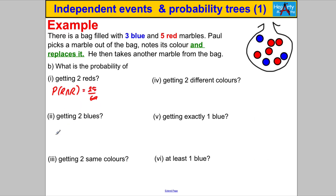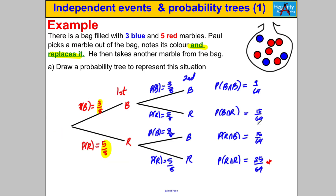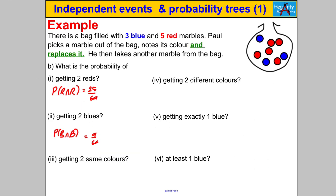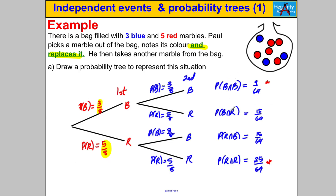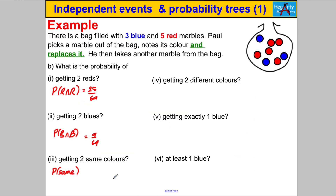Next they ask the probability of getting two blues — a blue then a blue. Going back to the tree, you'll see we've done that: the answer is nine out of 64. Then it says the probability of two same colours. To get the same colours you either get blue and blue or red and red. So you just add these two: nine out of 64 plus 25 out of 64, which equals 34 out of 64. You can simplify by dividing top and bottom by 2 to get 17 out of 32.